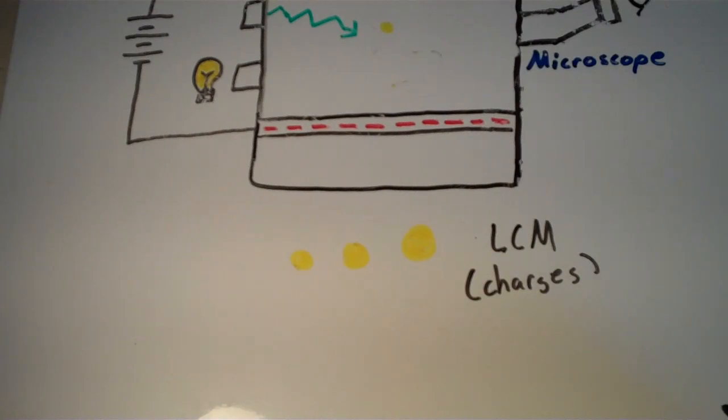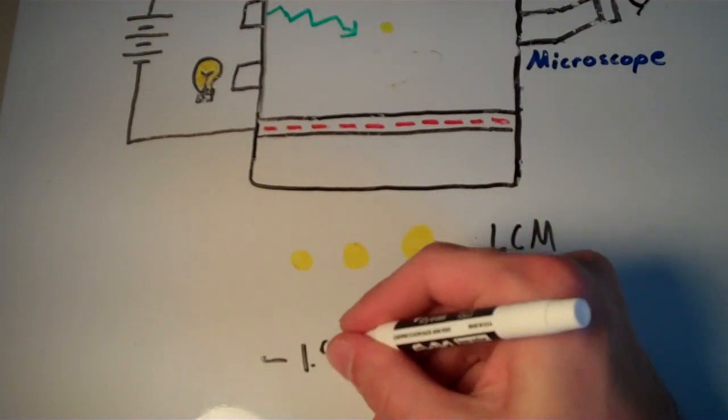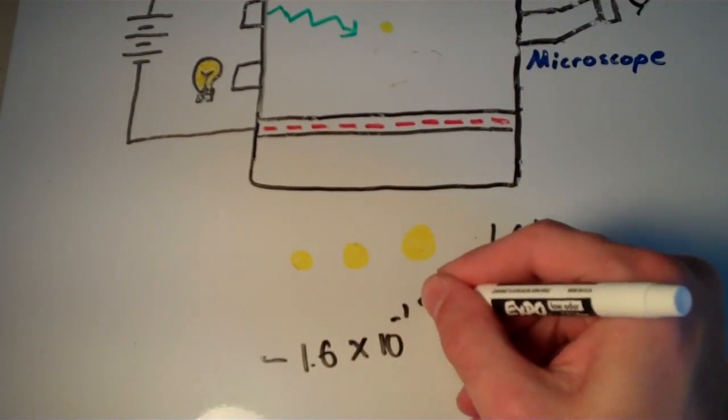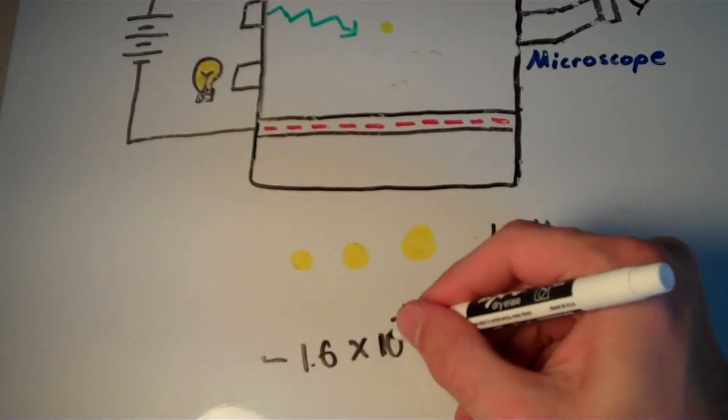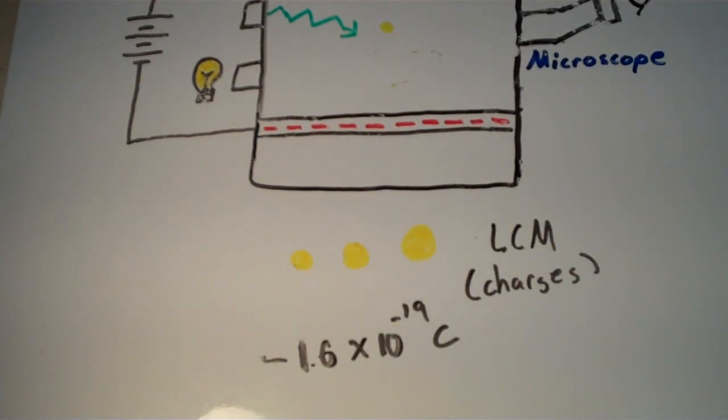And it turns out, Robert Millikan was right, and the least common multiple of all the charges of all the drops—I mean, he did this a bunch of times, he tried to get as many different sizes of drops as he could—and it turns out that the least common multiple of the charges was negative 1.6 times 10 to the negative 19 Coulombs. And that is the charge of a single electron. It is also called the elementary charge, negative 1.6 times 10 to the negative 19. So there you go, that's Millikan's oil drop experiment.